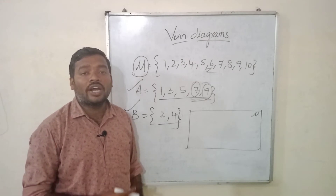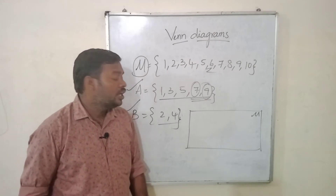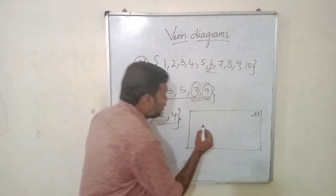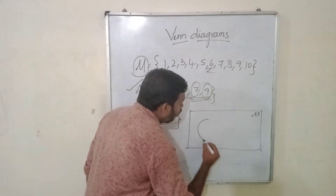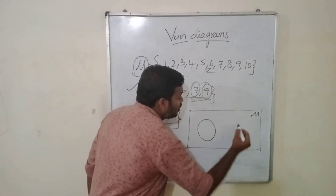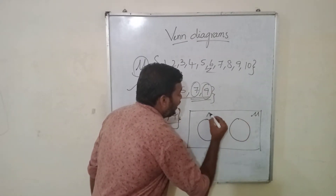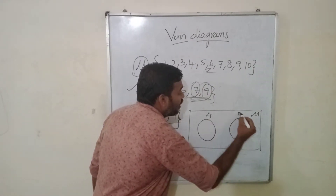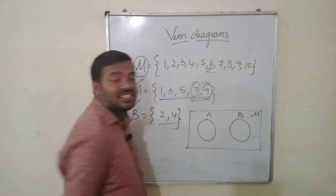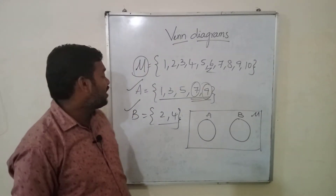If B is just two and four, there are no common elements in A and B. Then you need to draw a universal set. And as there are no common elements, the sets should be disjoint sets. Disjoint means they are not joined together — we need to draw the two sets A and B separately.